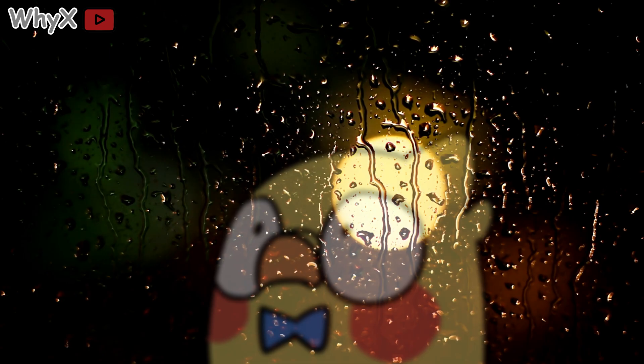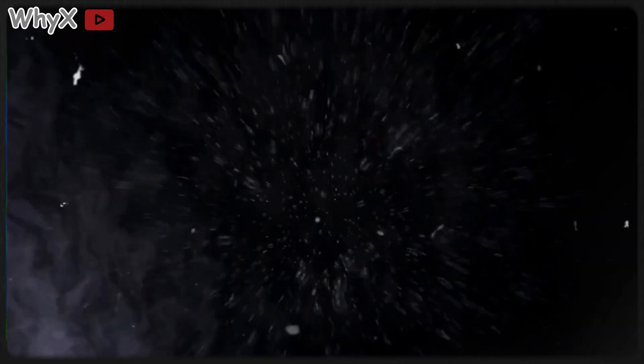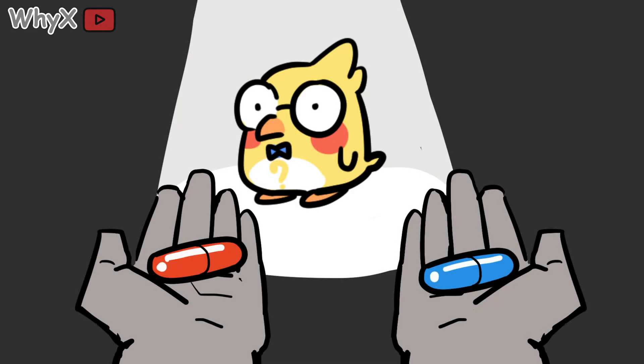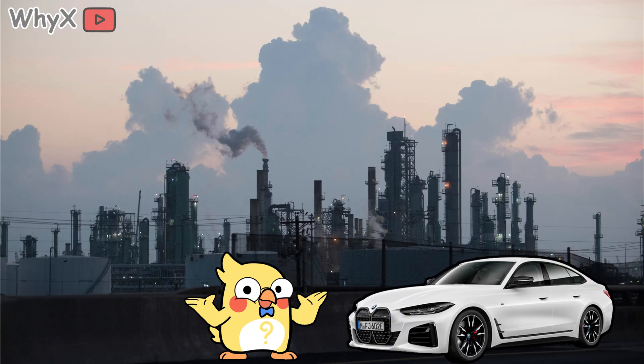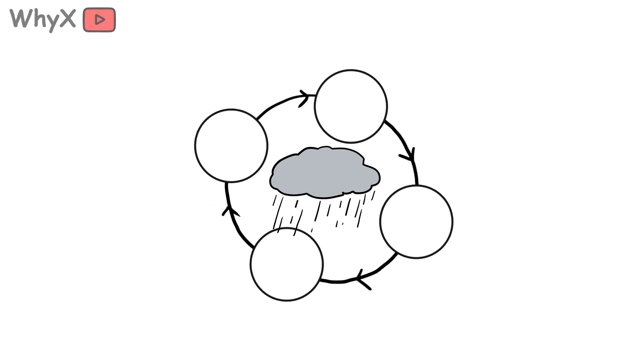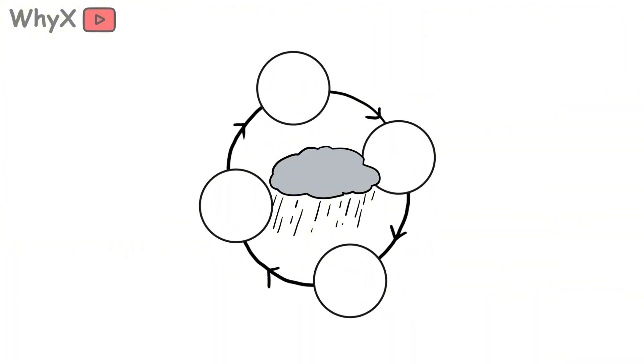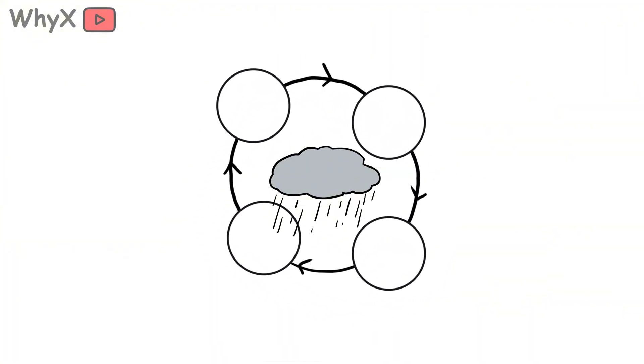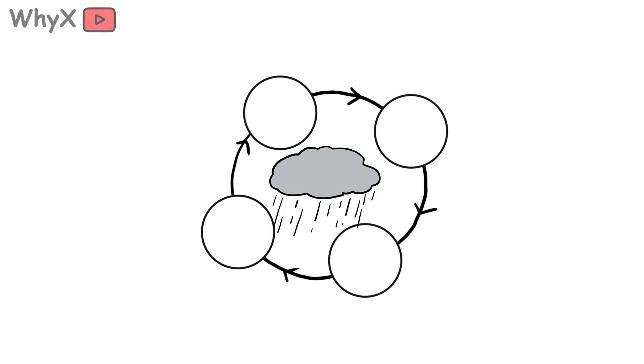And that brings us to the bigger question — one that goes beyond chemistry. What does acid rain say about us? Because acid rain, at its core, isn't just about what falls from the sky. It's about what rises from below. It's about how the choices we make on the ground — in factories, in cars, and in policies — find their way back to us through the clouds. It's like nature's feedback loop, a reminder that every emission has an echo. And for once, the echo was loud enough that humanity listened.